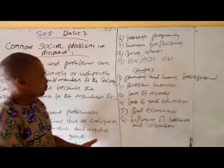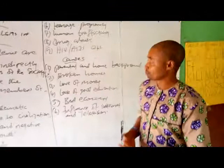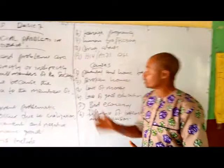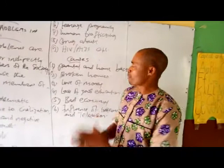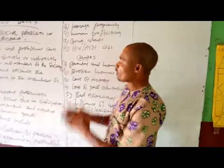But it should be worth it for us to look at the causes of social problems. Number one: inspiration and home background. Many parents are already involved in all these activities, so it becomes very easy for their children to copy.